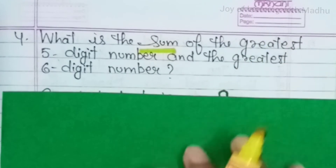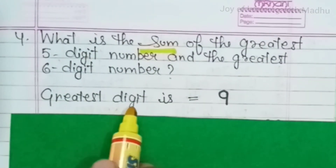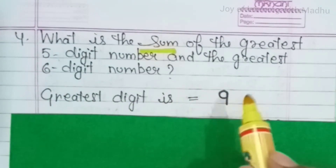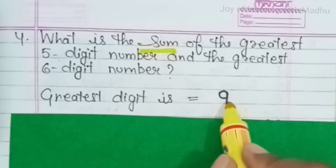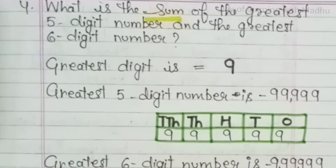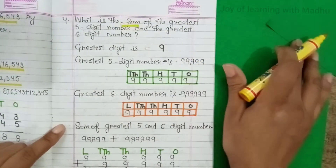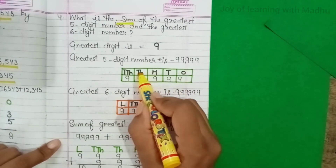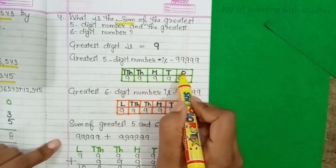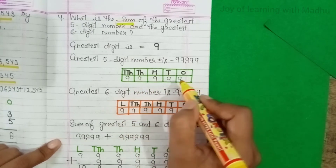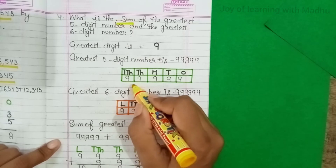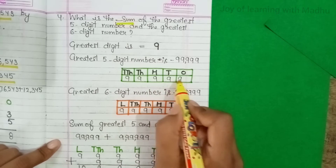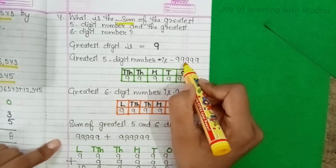इसके लिए पहले जानना होगा कि greatest digit क्या है। 0 to 9 में सबसे greatest digit 9 है। इस digit से greatest 5-digit number बनाने के लिए 5 boxes बनाएंगे, place values लिखेंगे, और हर box में 9 लिखेंगे। So the greatest 5-digit number is 99,999.